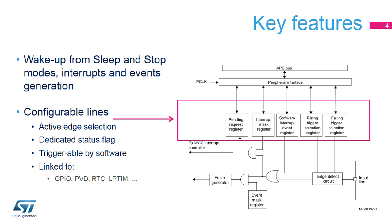Configurable lines allow the user to select which active edge generates interrupts or events, with a dedicated status flag for each line. Requests on configurable lines can also be generated by software. Configurable lines are linked with external interrupts from general-purpose input-outputs, programmable voltage detector, real-time clock, and low-power timer.